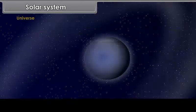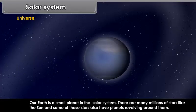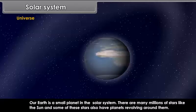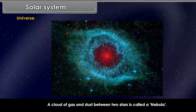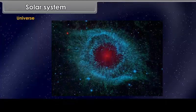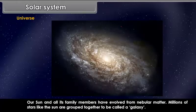Universe. Our Earth is a small planet in the solar system. There are many millions of stars like the sun and some of these stars also have planets revolving around them. A cloud of gas and dust between two stars is called a nebula. Our sun and all its family members have evolved from nebular matter.